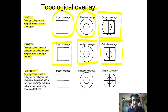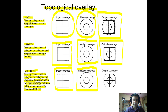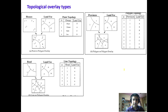The third function is intersect, which overlays points, lines, or polygons on polygons but keeps only those portions of the input coverage features that fall within the overlay coverage. Here, the focus is on the intersect coverage — we allow only those portions from the input coverage which fall within the boundary of the intersect coverage. The output shows only the overlapping area.